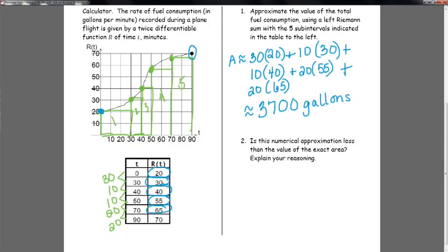Well, if you look at your graph, number two is asking, is this numerical approximation less than the value of the exact area or more? Well, if you notice, our rectangles are below. We call this an underestimation because there's area underneath our curve that we have not taken into account. They kind of look like little triangles. We're not considering these with our approximation. So since they have not been considered, it's going to be less than the value of the exact area.